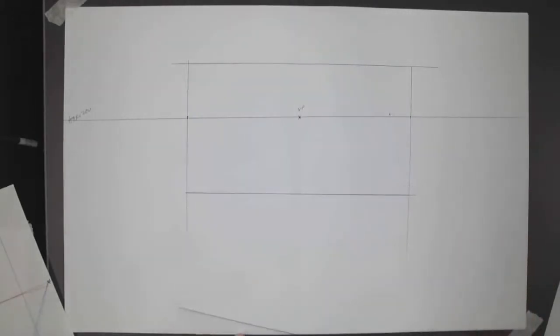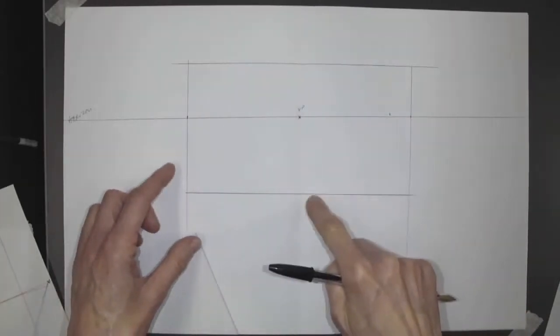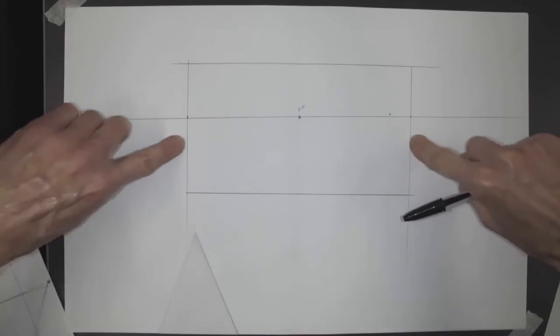So there's my floor line now. That's my back wall from the ceiling down to the floor, from the left wall to the right wall.